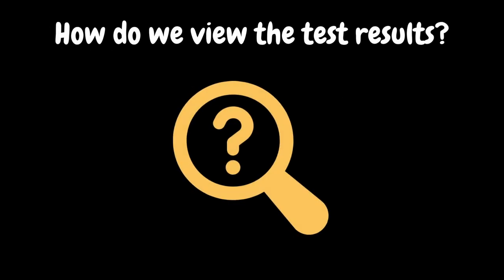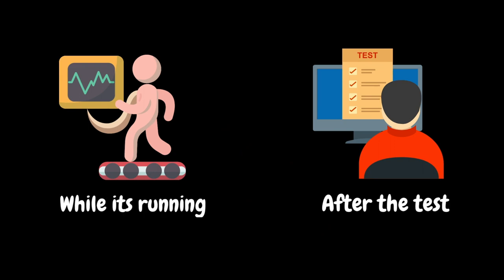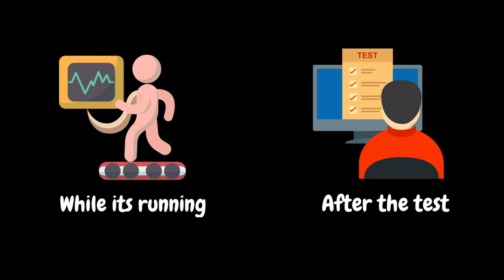Now we understand the process of executing JMeter scripts using CLI and non-GUI mode. The question is: how do we view the test results? Basically, the results can be viewed in two ways — while the test is running, and after the test.